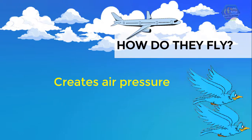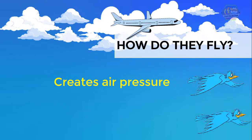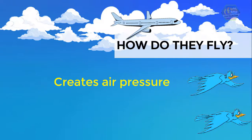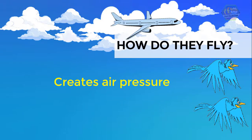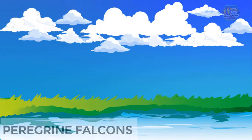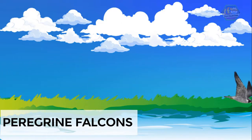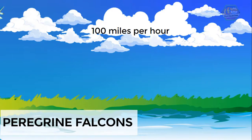Birds fly by flapping their wings, and that creates air pressure under the wings that lifts them up, just like airplanes do. In fact, airplanes are designed based on birds. You might notice that airplanes and birds almost have the same shape. One of the fastest birds is the peregrine falcon — it can reach speeds of well over 100 miles per hour. They're like a small jet plane!